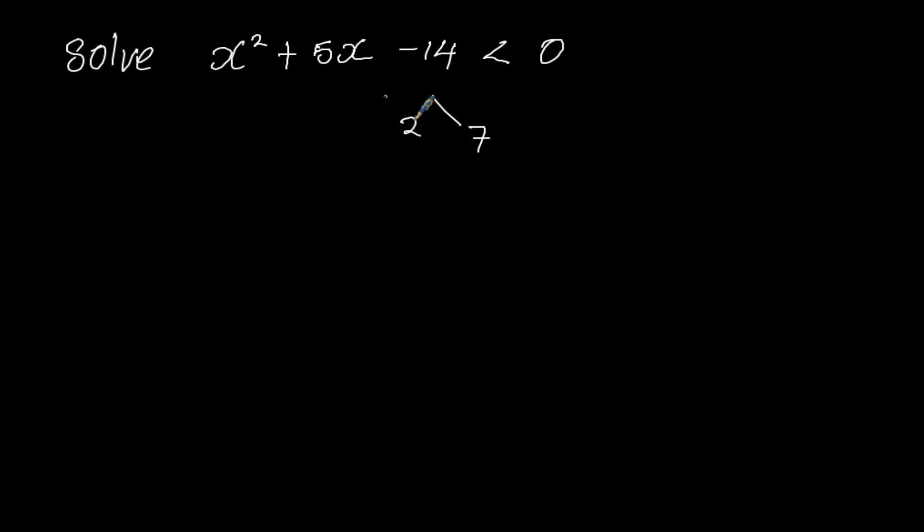But one of these ones should be negative for us to get negative 14. And when we add these two, it should give us 5. So that is it. And we have x squared minus 2x plus 7x minus 14 is less than 0.